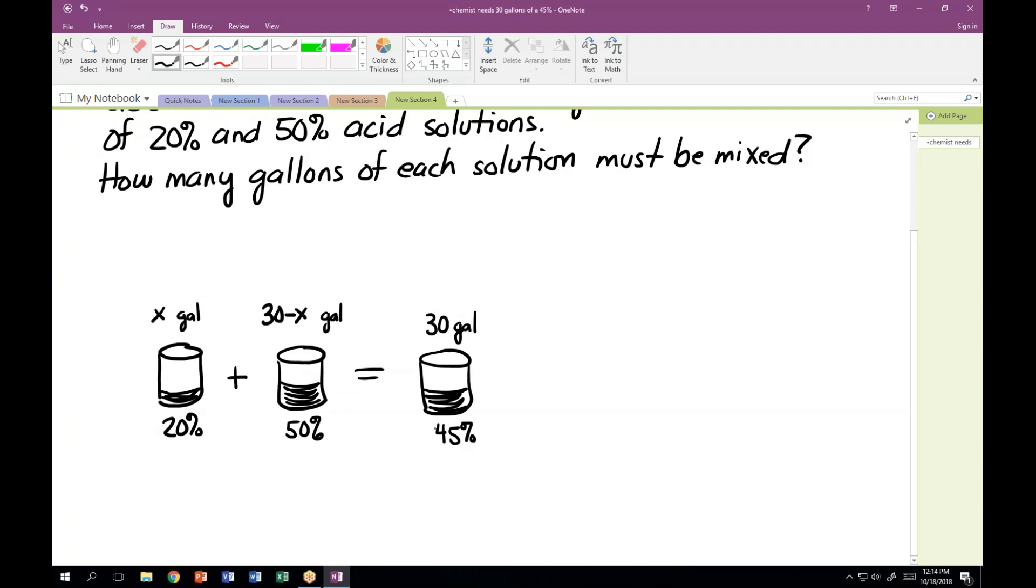So if I do a little bit of a diagram here, I can figure out how much acid is in each of these. So the amount of acid in each of these can be determined. And for 20%, we said 20% of the total in that container is acid, so that would be 0.2 times x, 0.2 being the decimal equivalent of 20%.